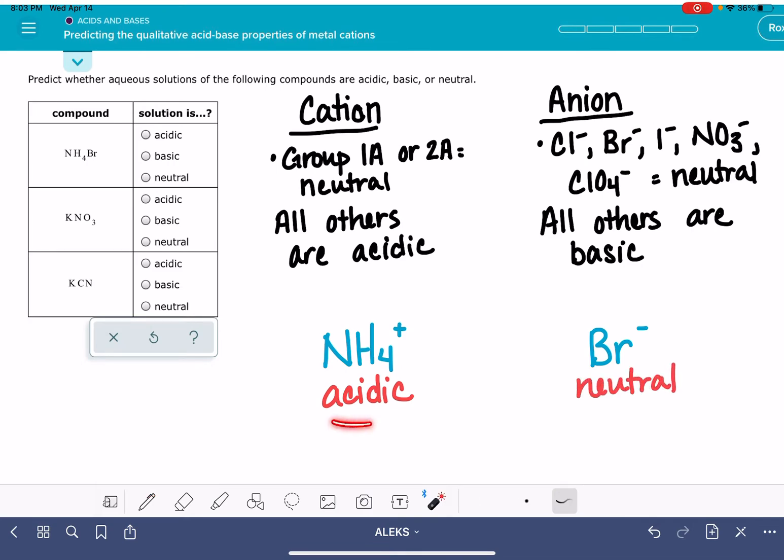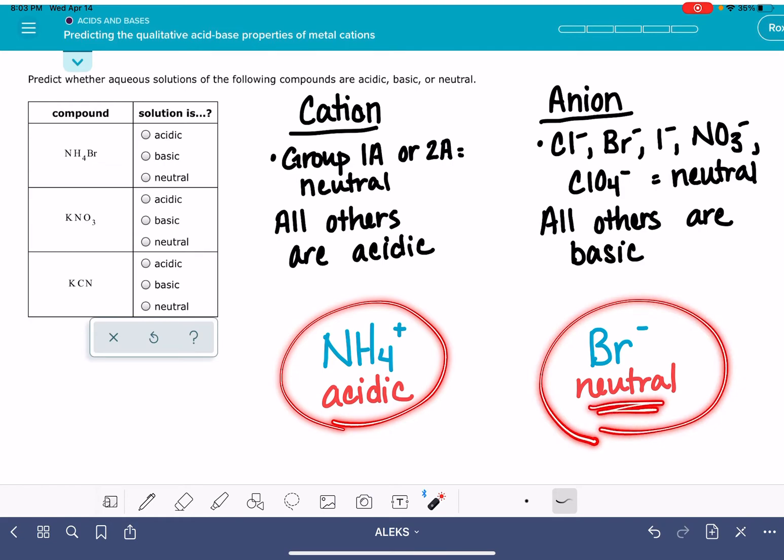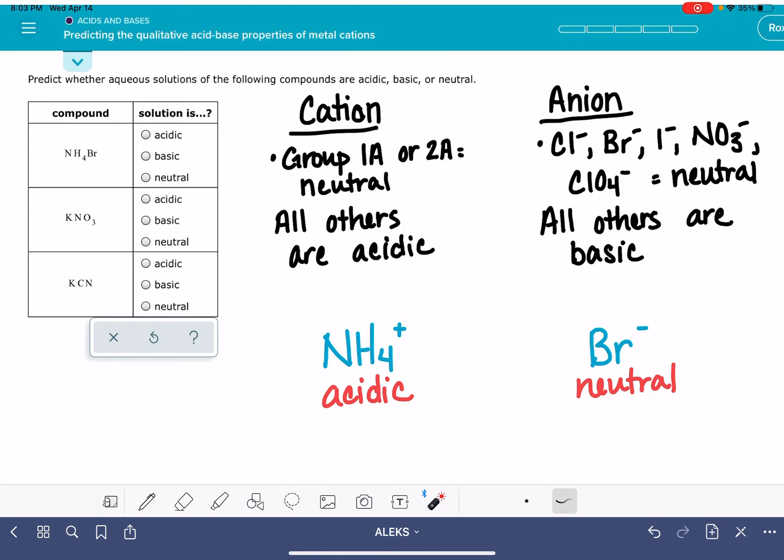So when you put these two together in solution, the bromide ion, because it's neutral, is not doing anything for the pH of the solution. The NH4+, however, is causing the solution to be acidic. And that means that overall, this is going to be an acidic solution.